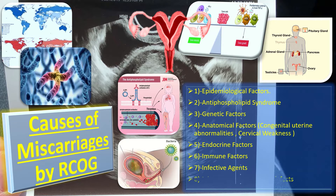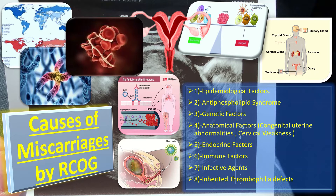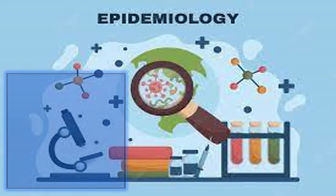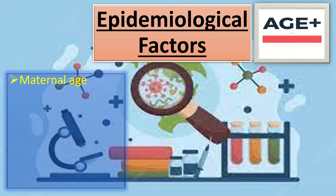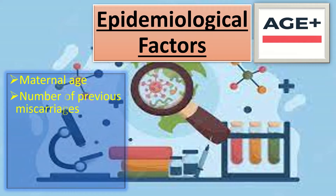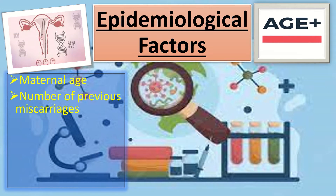The epidemiological factors include, first, maternal age. Advancing maternal age is associated with a decline in both the number and quality of the remaining oocytes, which is why there is an increased risk of miscarriages with advancing maternal age. Second, the number of previous miscarriages — the risk of further miscarriage increases after each successive pregnancy loss.